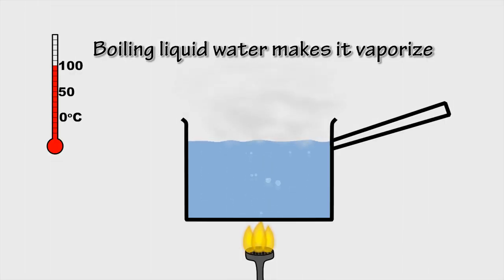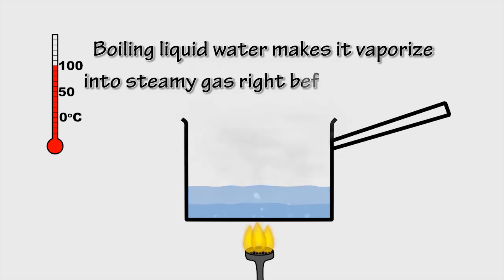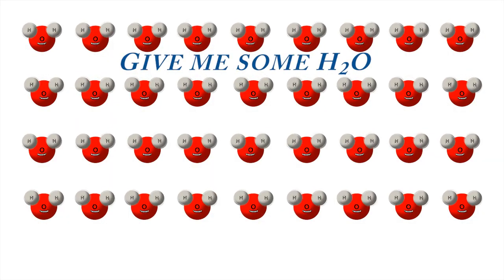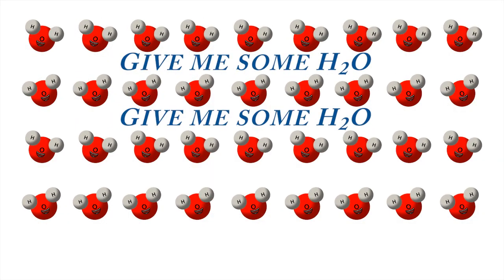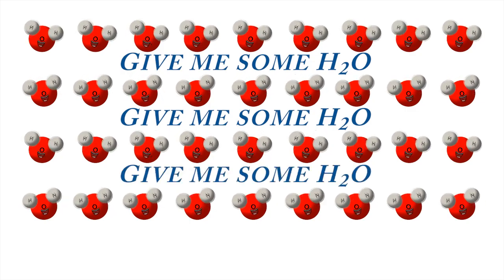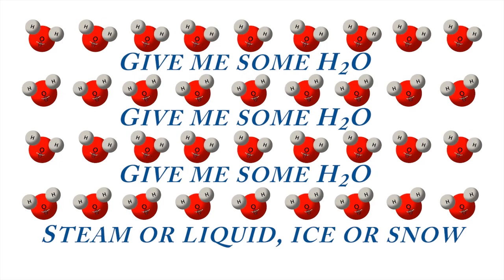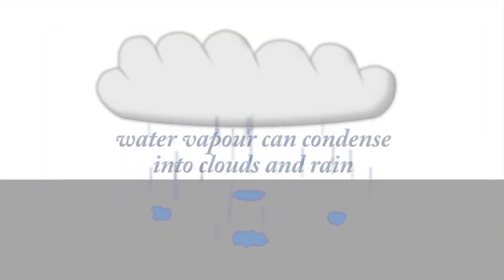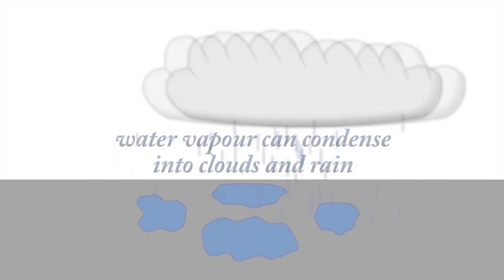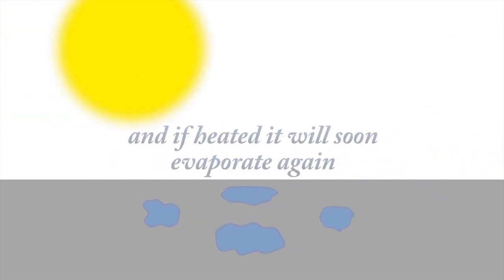Boiling liquid water makes it vaporize into steamy gas right before your eyes. Give me some H2O, give me some H2O, give me some H2O - steam or liquid, ice or snow. Water vapor can condense into clouds and rain, and if heated it will soon evaporate again.